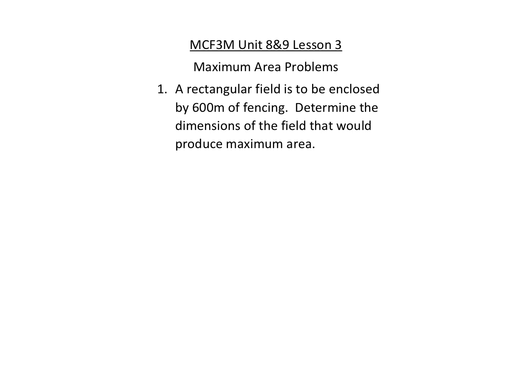Here we have some more maximum and minimum problems — these ones are about area, so we are trying to maximize area given a certain amount of fencing. In this case, they want to make a rectangular field, which would have two widths and two lengths for the perimeter, and we have 600 meters of fencing to do that.